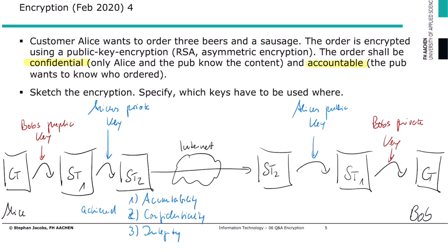And then we have availability, which is not reached. Somebody could still destroy the message in between. When we talk about communication, it's always hard to achieve 100% availability. What you could do is double-check by sending some kind of acknowledgement back so the sender knows the receiver got the message, but this does not guarantee that availability will be achieved.